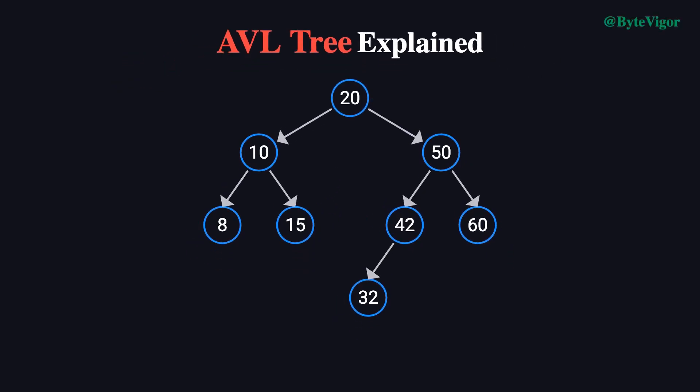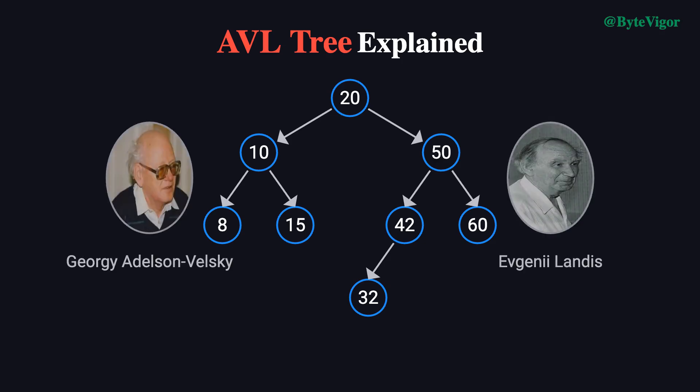Hello everyone! In today's video, we're going to dive into an important data structure, the AVL tree. It's a classic self-balancing binary search tree widely used in scenarios that require efficient searching and dynamic data maintenance. You might be wondering, what do the letters AVL stand for? They are the initials of the two inventors, Adelson-Velsky and Landis, who introduced this tree structure in 1962. That's why we call it the AVL tree.